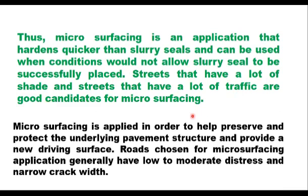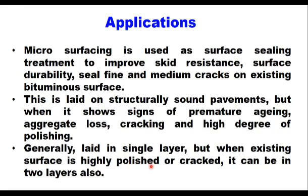Microsurfacing is applied to help preserve and protect the underlying pavement structure and to provide a new driving surface. Roads chosen for microsurfacing generally have low to moderate distress and narrow crack width. It is used as a surface sealing treatment to improve resistance and surface durability. It seals fine and medium cracks on existing bitumen surfaces and is laid on structurally sound pavements showing signs of premature aging, aggregate loss, cracking, and high degree of polishing. Generally it is laid in a single layer, but when the existing surface is highly polished or cracked, it can be laid in two layers.